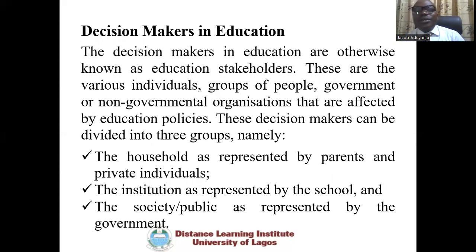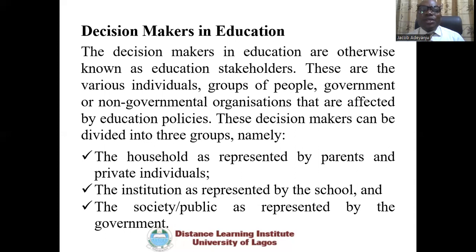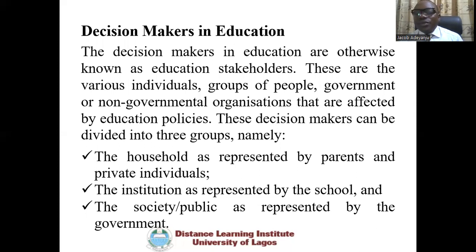We move to the next concept: decision makers in education. When we talk of decision makers in education, they can also be called stakeholders in education. They are the various individuals, groups of people, government, or government organizations that are affected by education policies and that can also affect education policies. The decision makers can be divided into three categories: the household represented by parents and private individuals, institutions represented by schools, and the society or public represented by the government.